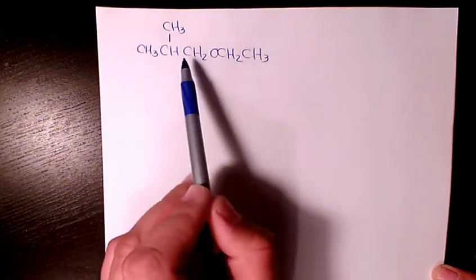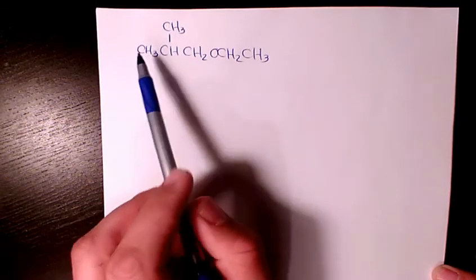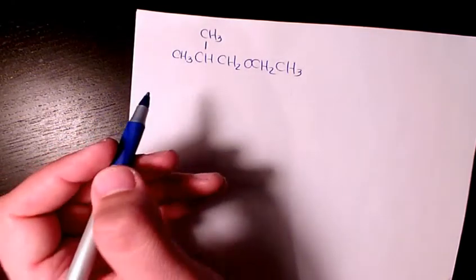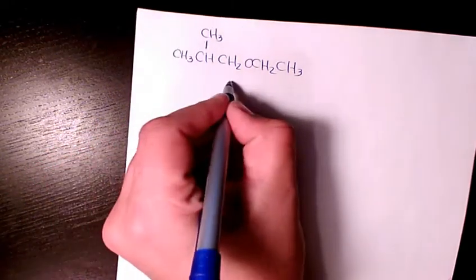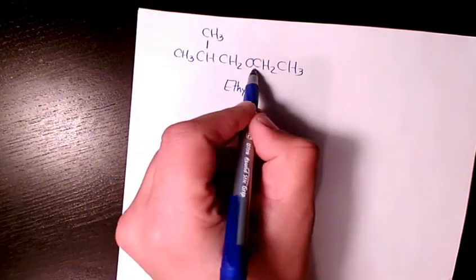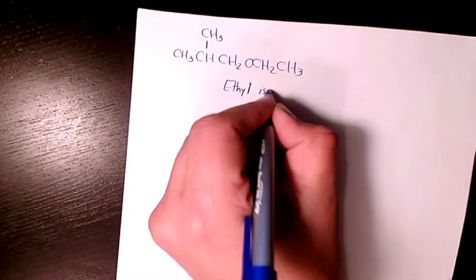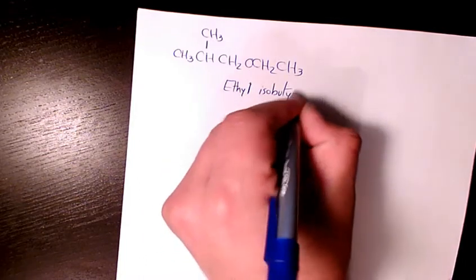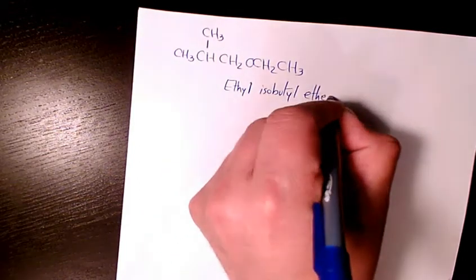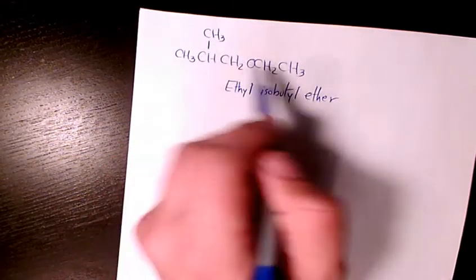So here we have ethyl group and here we are dealing with isobutyl, as you see here. If I want to show you the common name, that's gonna be ethyl isobutyl ether. And the IUPAC name is going to be...